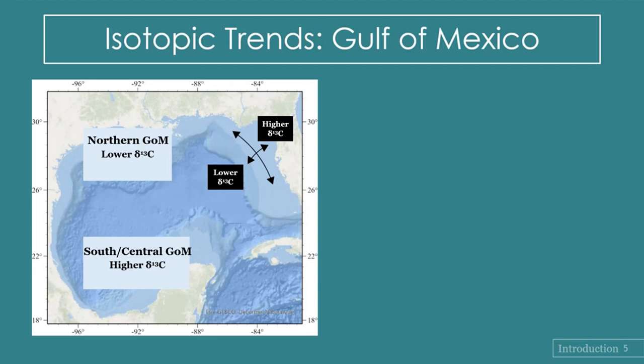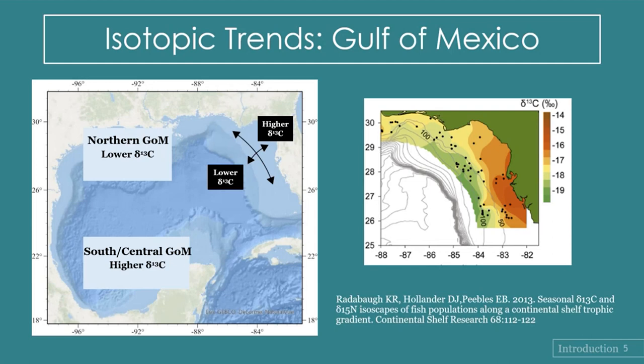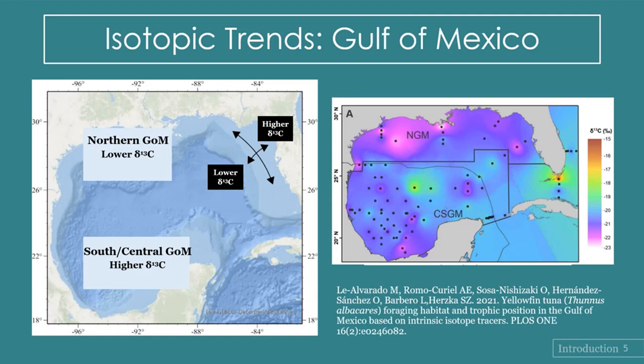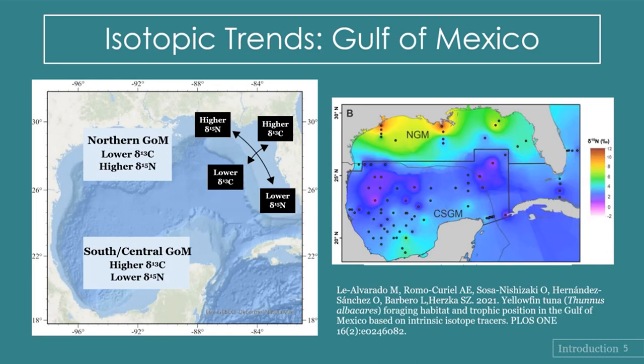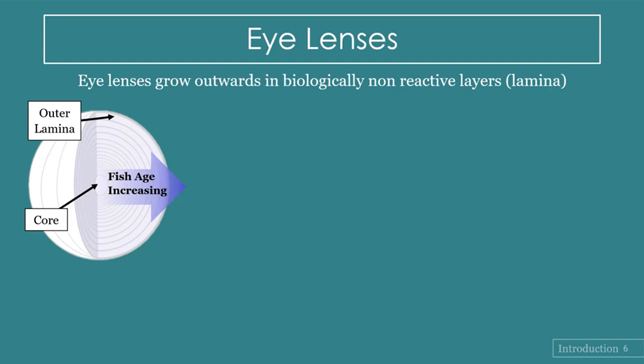Another trend we can look at is geographic trends, which are portrayed in isotope maps known as isoscapes. This is a delta carbon isoscape from Cara Radaba's work — you can see that delta carbon generally decreases with ocean depth. For the broader Gulf of Mexico, there tend to be lower delta carbon values around the Mississippi River and in the northwestern Gulf. This isoscape from Le Alvarado's 2021 paper shows that delta nitrogen values have a clear latitudinal gradient in the Gulf of Mexico, with higher delta nitrogen values in the northern Gulf and lower values in the central and southern Gulf.